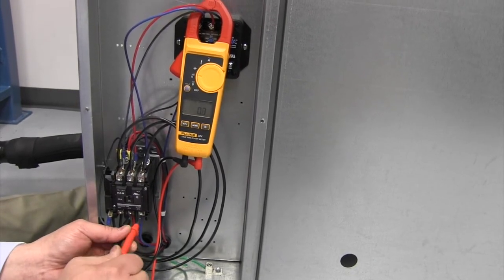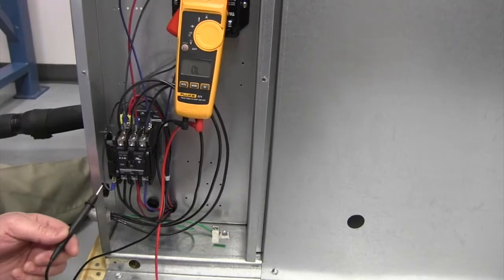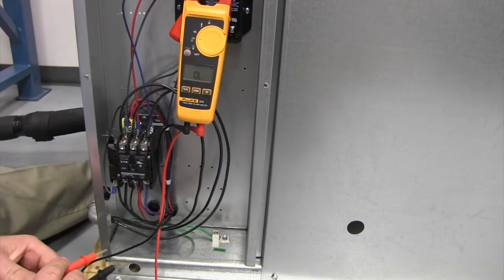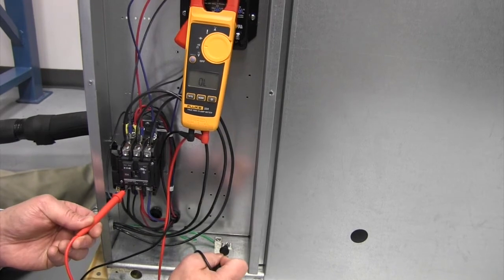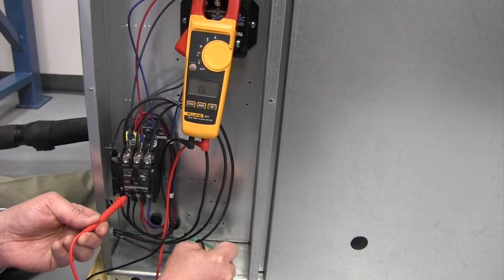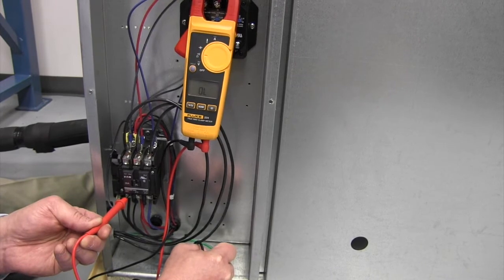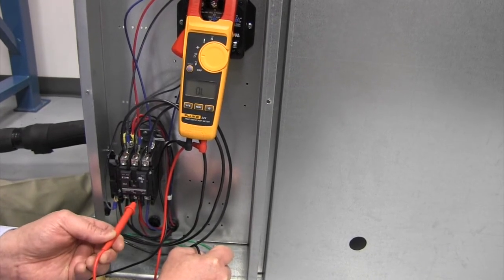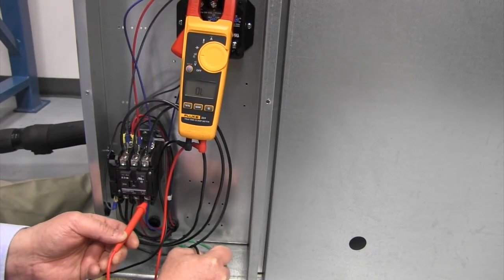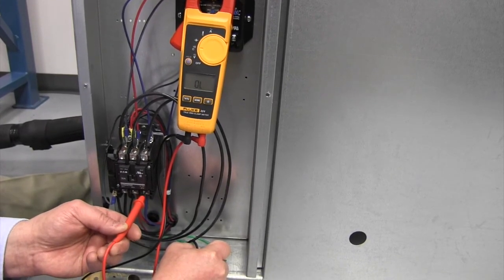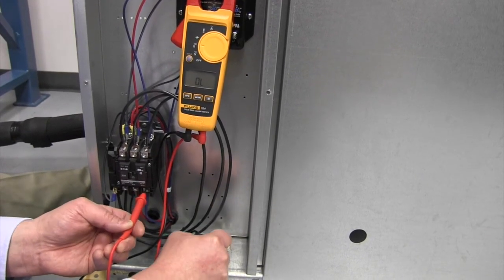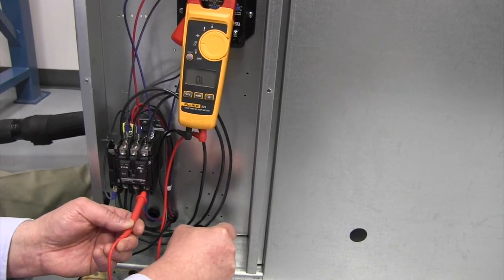The other check I want to make is my resistance to ground, and it should be infinite, so I'm going to go on my ground terminal and my L1 connection, and I'm reading OL on my digital multimeter, which is what I would expect to see on each one of those phases. If that coil was shorted to ground, we would see zero resistance.